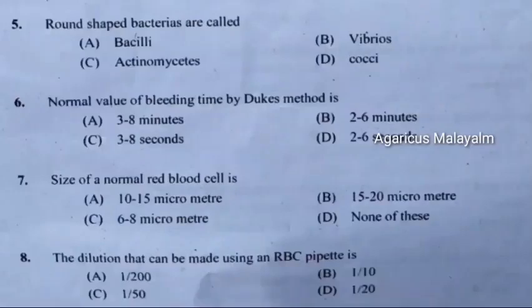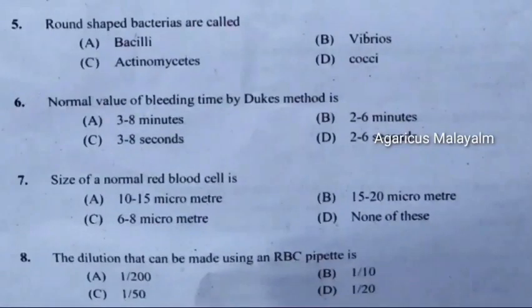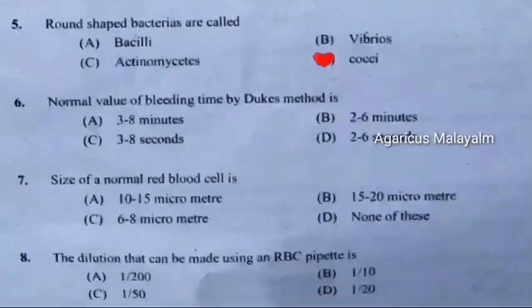Fifth question: Round-shaped bacteria are called. Correct answer is Option D: Cocci.